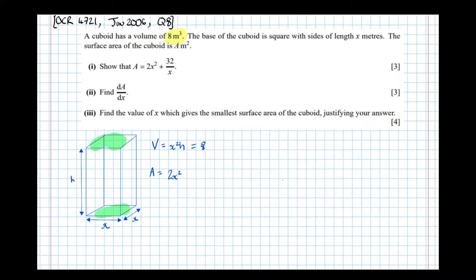And then there's 4 surfaces: 1, 2 on the side there, front and back, 1, 2, 3, 4. And each of those have area x times h. So plus 4xh.